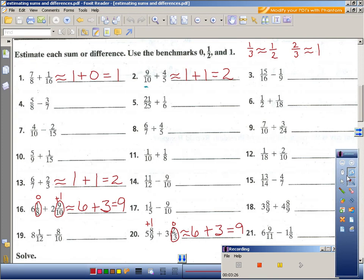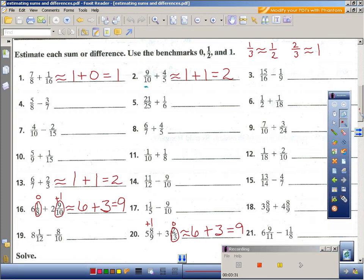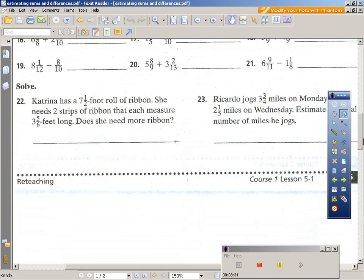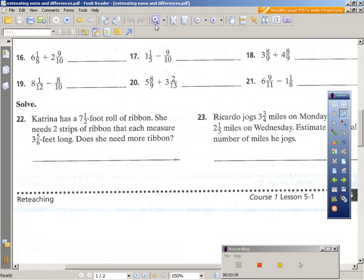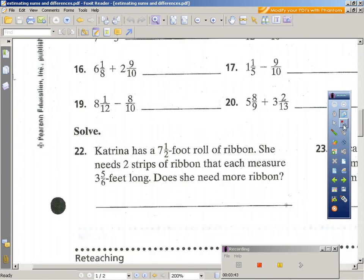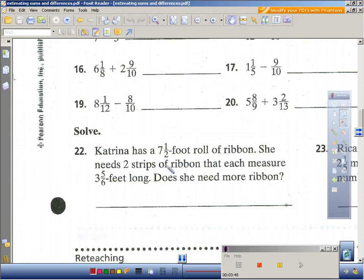Let's scroll down and look at one of the word problems. Let's look at twenty-two and maximize that a little bit. So let's see what we got. Katrina has seven and one-half foot roll of ribbon. She needs two strips of ribbon that each measure three and five-sixths feet long. Does she need more ribbon?